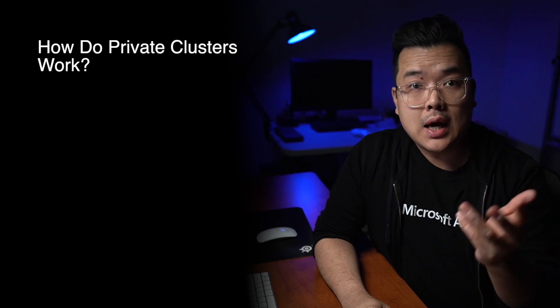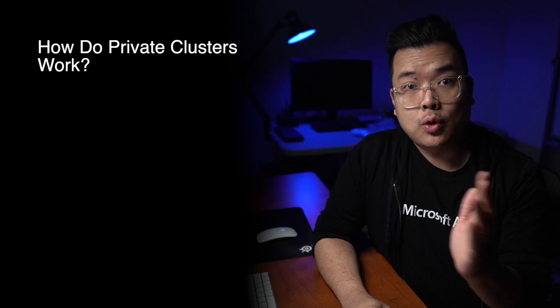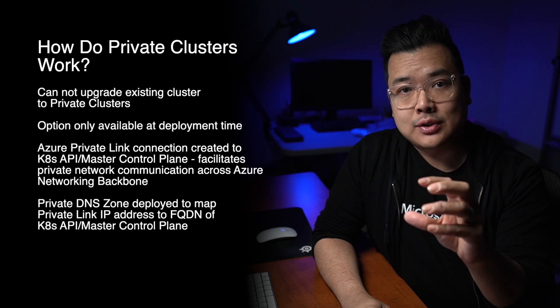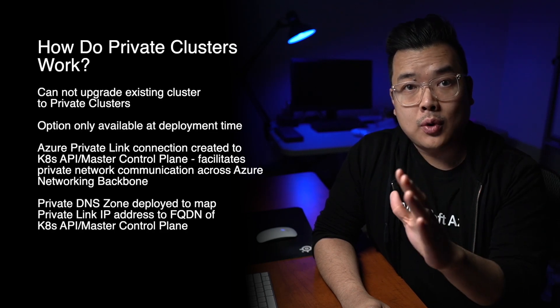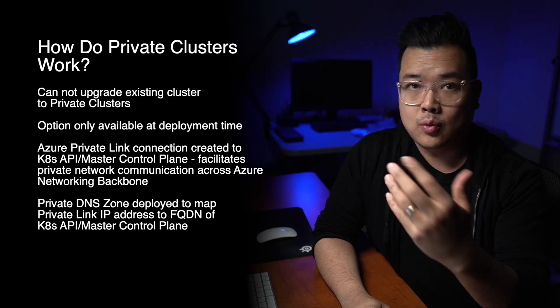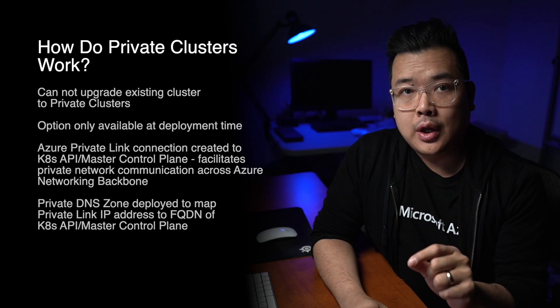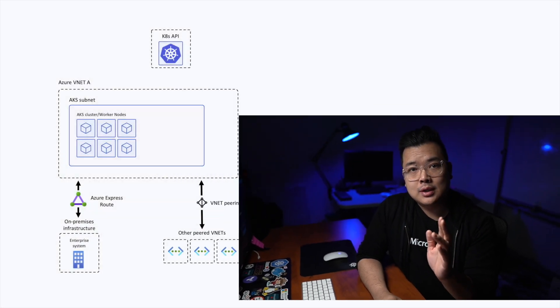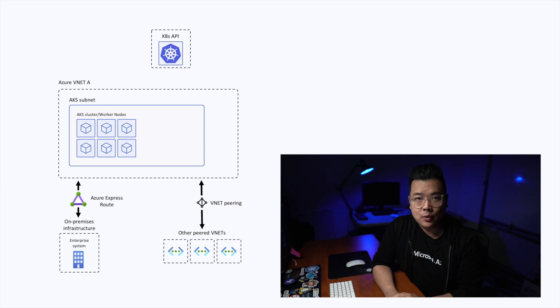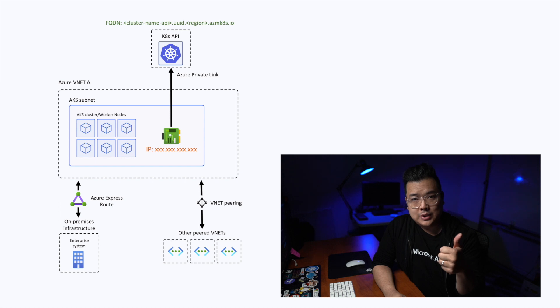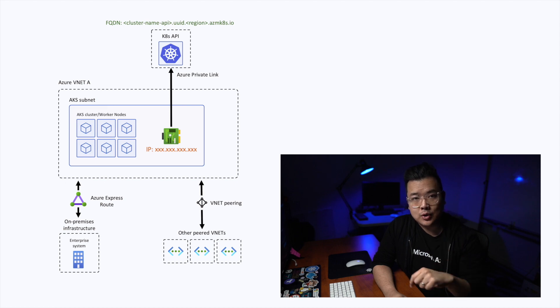The next question is how does private clusters actually work behind the scenes? When you deploy AKS private clusters, first of all, you cannot upgrade an existing cluster to private clusters — you have to redeploy as it is today. Second of all, when you actually do deploy private clusters, we generate two additional things for you on your behalf. One, you get a private link setup, which is essentially a network card that will act as the attachment for your actual control plane into your network.